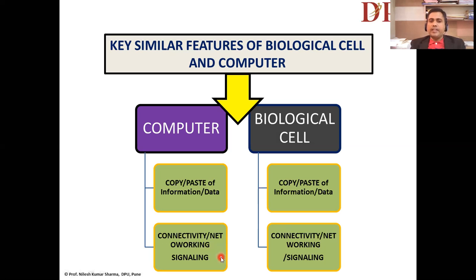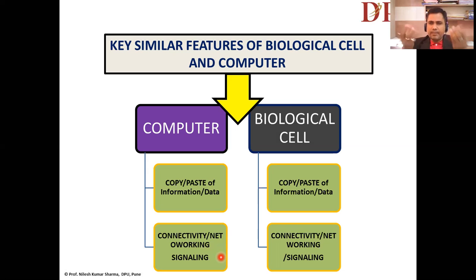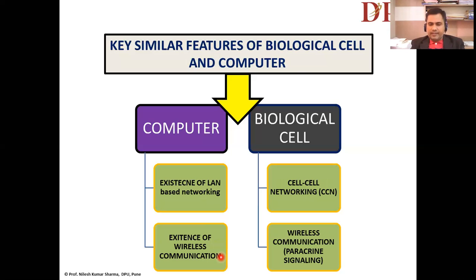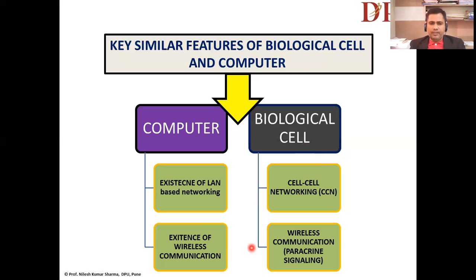Another interesting point is connectivity and network signaling. Computers and electronic gadgets have powerful connectivity and networks. Our biological cells are nothing less — a single cell has billions of nano-dimension protein structures, and these proteins in the form of receptors, enzymes, and other molecules serve the purpose of networking and signaling. Furthermore, computers can be connected through a local area network (LAN), and similarly biological cells are connected with other cells through networking systems.